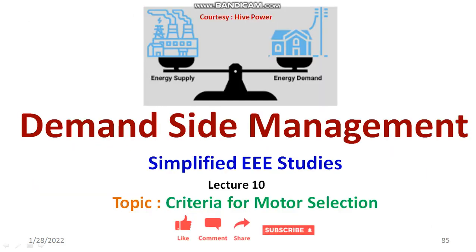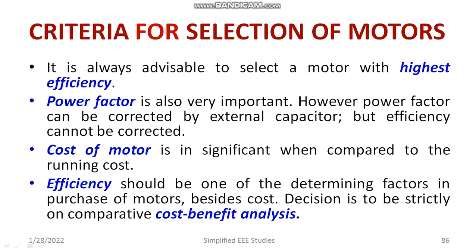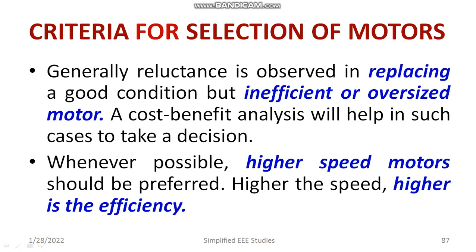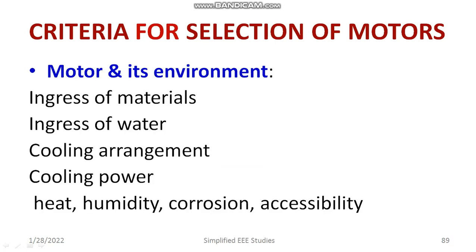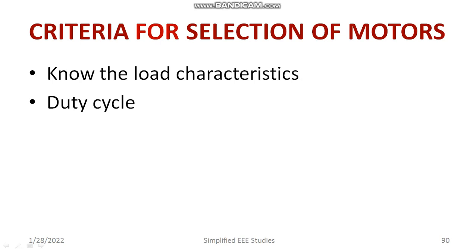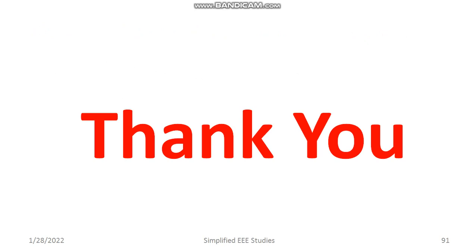In this session I have discussed important criteria related to motor selection: power factor, efficiency, the relation between speed and efficiency, replacing inefficient motors, studying speed-torque characteristics, motor bearing features, power rating, motor environment and material quality, and duty cycle and load characteristics. You should have a good literature review, speak with experts in the area, and carefully review quotations and data sheets provided by companies. Thank you very much for watching this video.